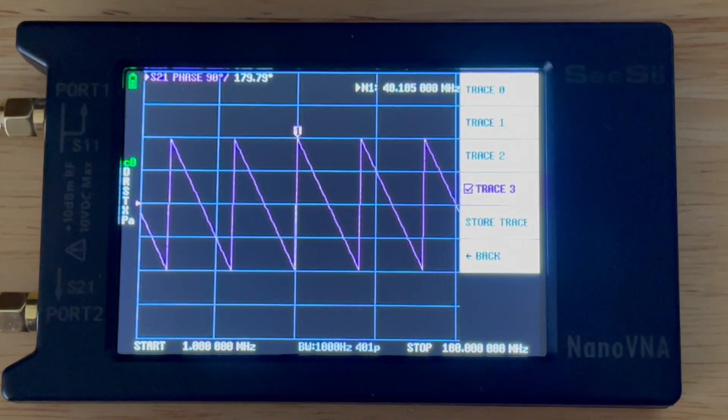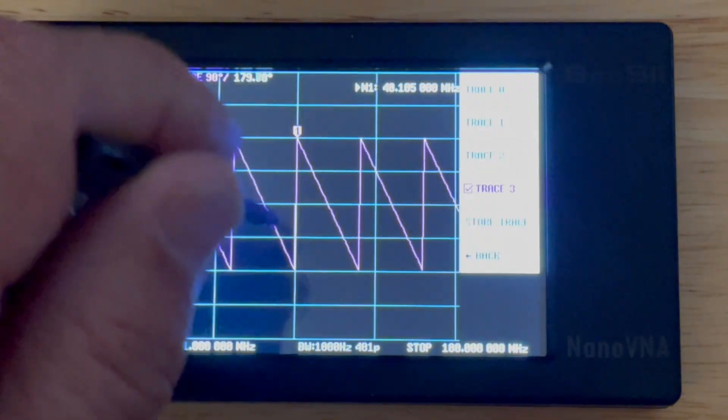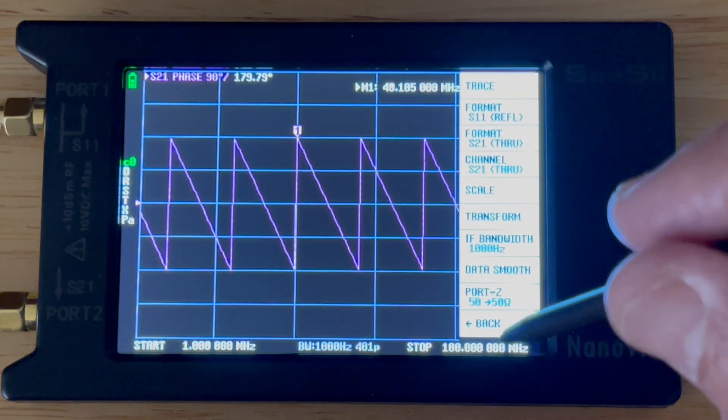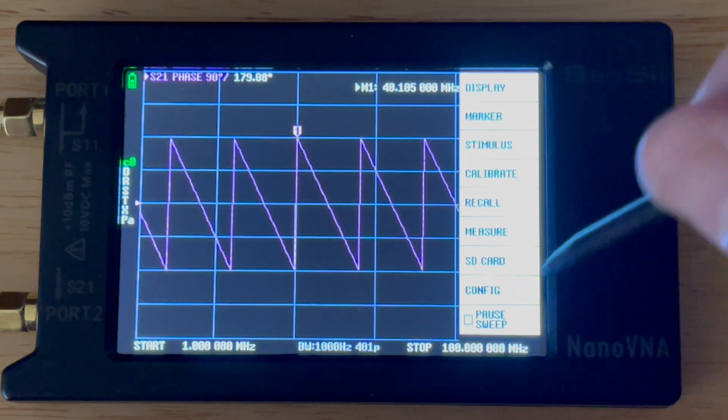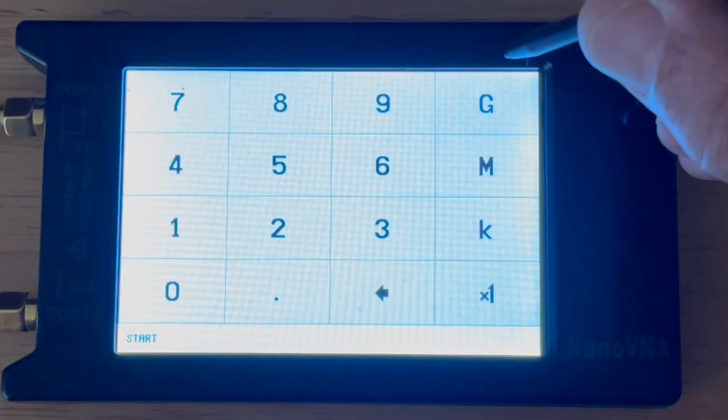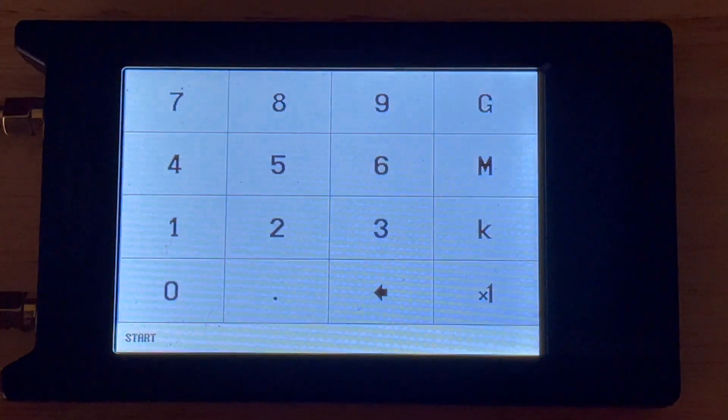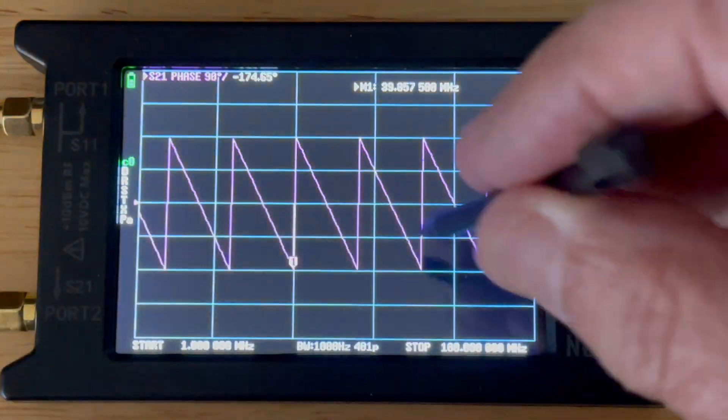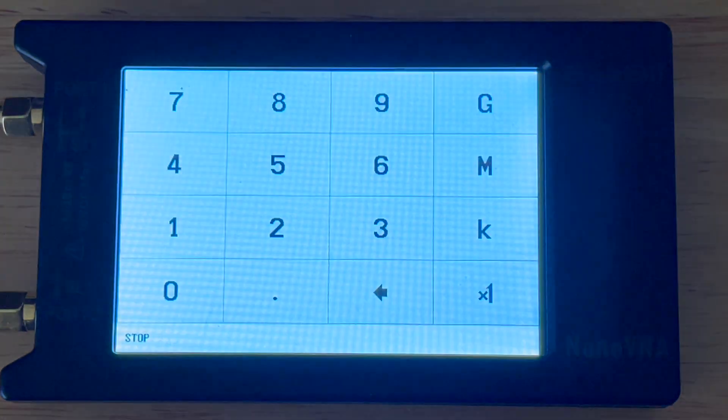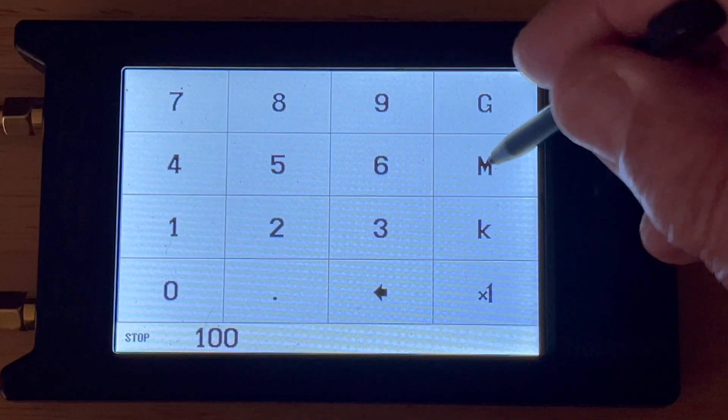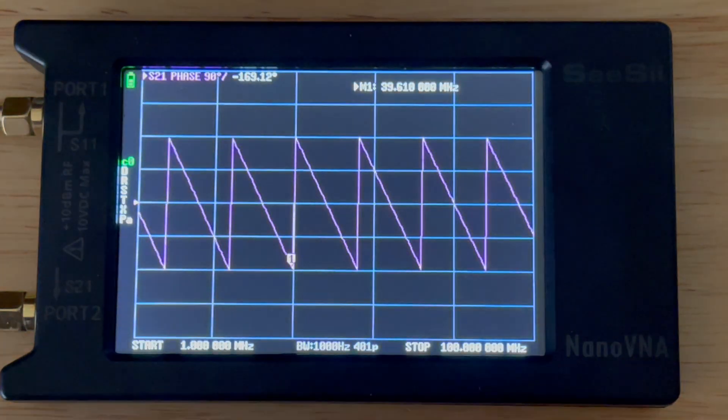Okay, all the traces are turned off except for trace three. I'll go back—I should use my other hand. I want to go to stimulus. Start will be 1 megahertz and the stop will be 100 megahertz, and that's the waveform that you will get.